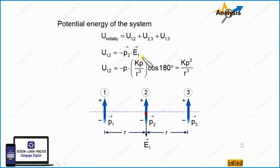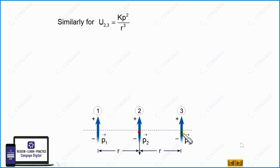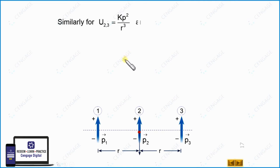Similarly, U23 equals KP²/R³ by symmetry, since the configuration is identical. For U13, the process is the same but the separation is 2R instead of R. Substituting 2R gives U13 = KP²/8R³.